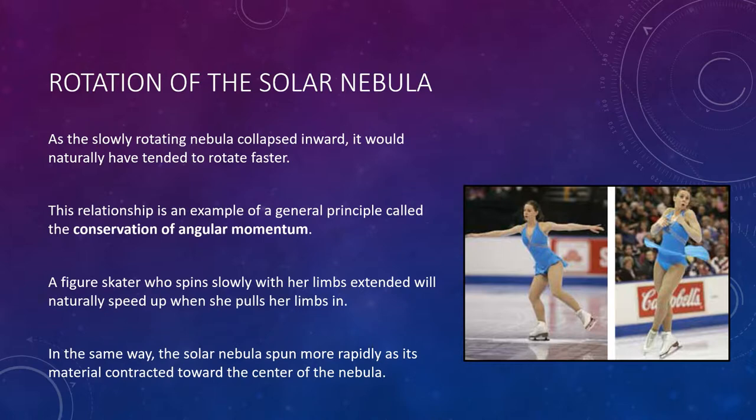If the solar nebula had not been rotating at all, everything would have fallen directly into the protosun, leaving nothing behind to form planets. Instead, the solar nebula must have had an overall slight rotation, which caused its evolution to follow a different path.